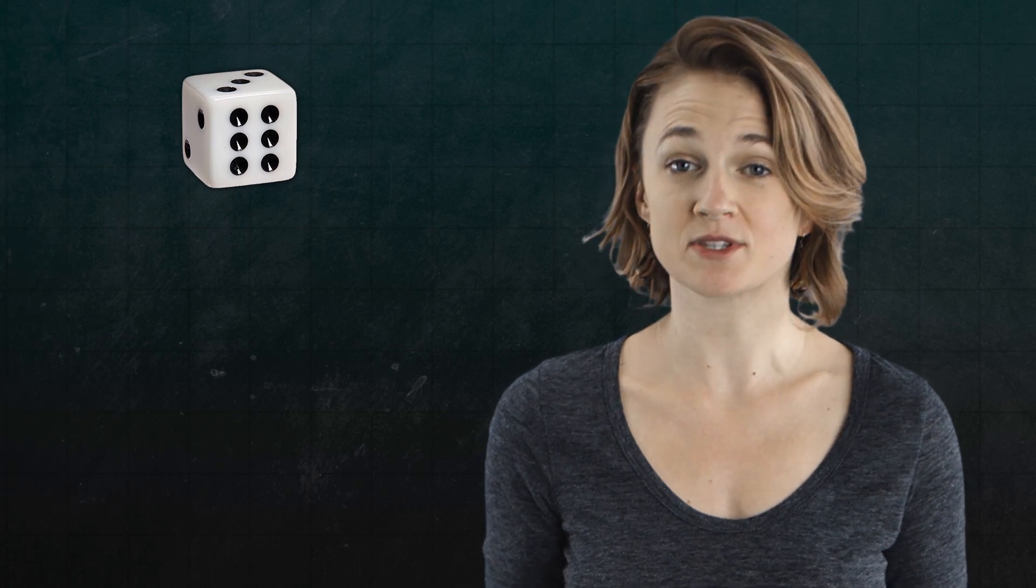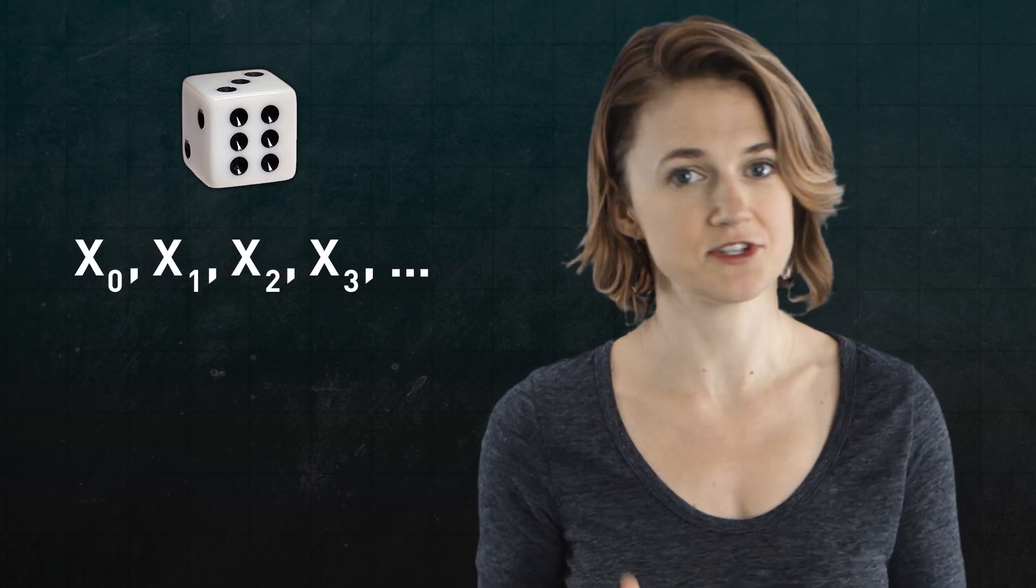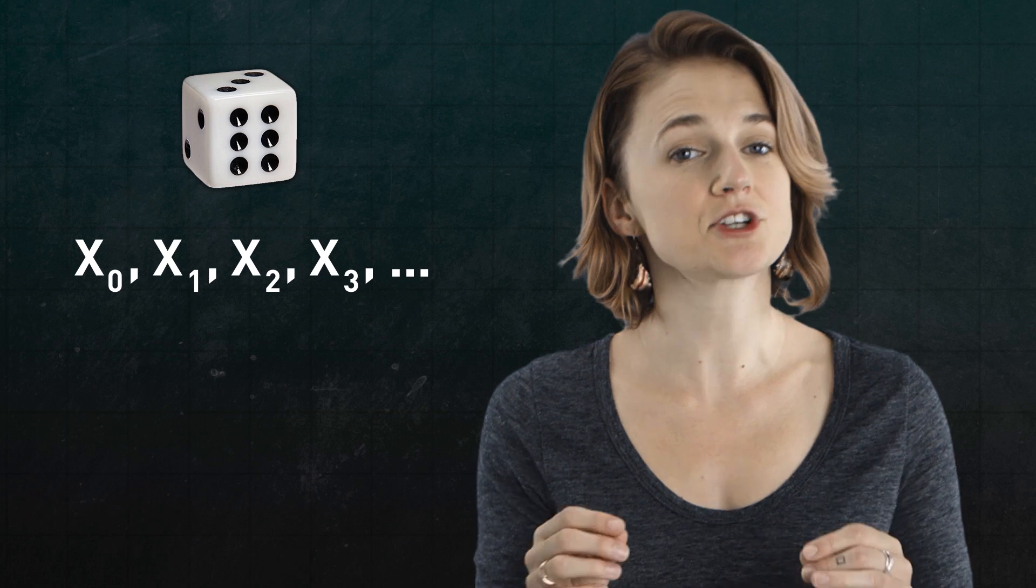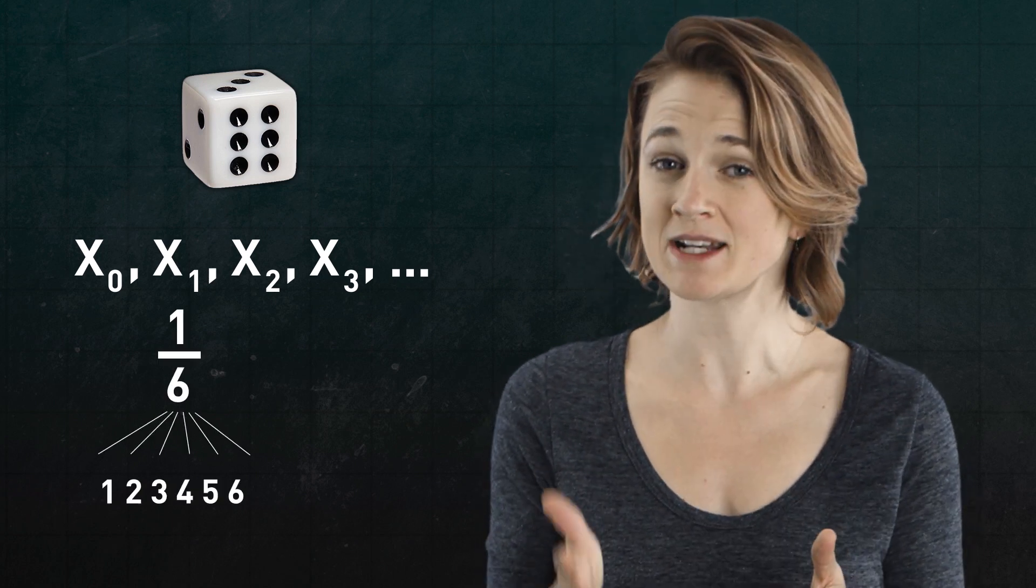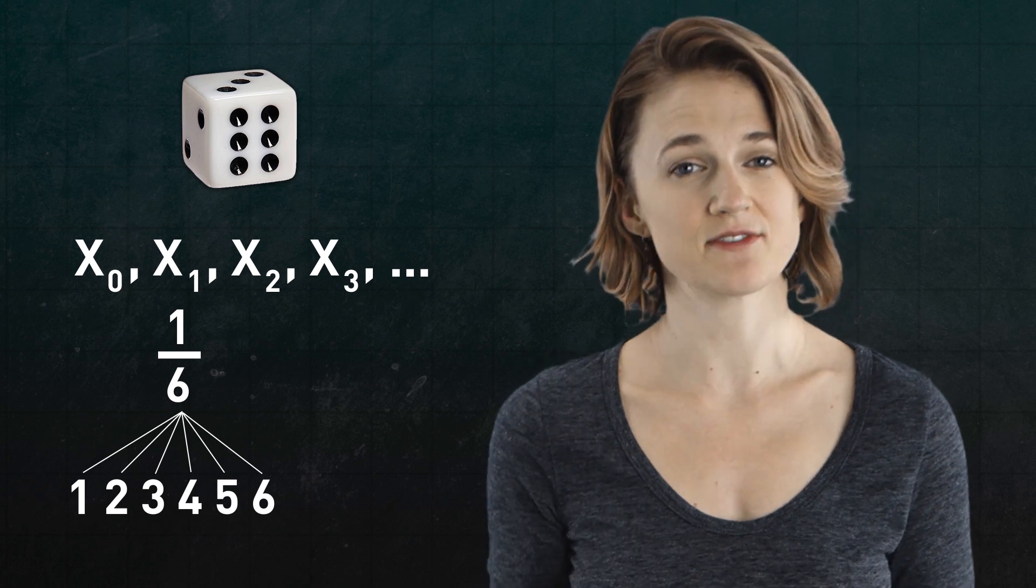To simulate the roll of a die, you'll want to create a sequence of random numbers, x0, x1, x2, x3, and so on, each of which has a 1/6th chance of being each number between 1 and 6. That's the specified distribution.